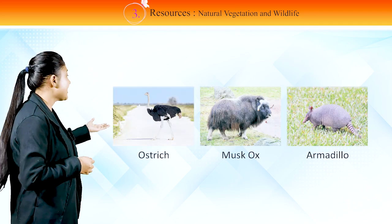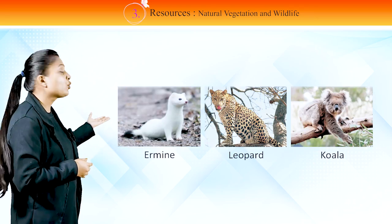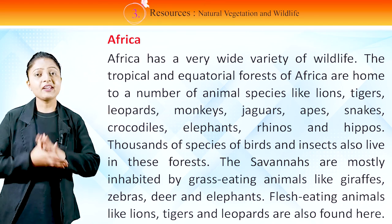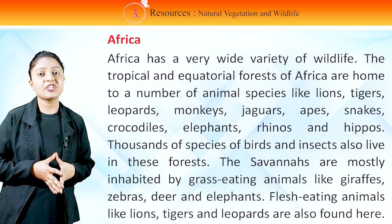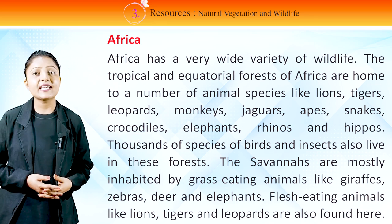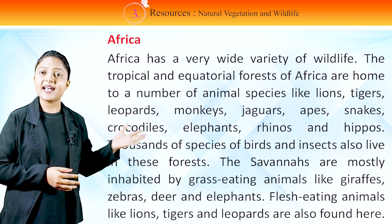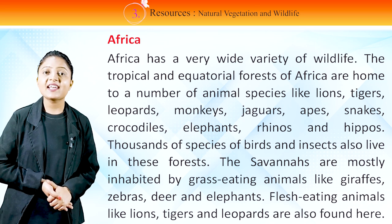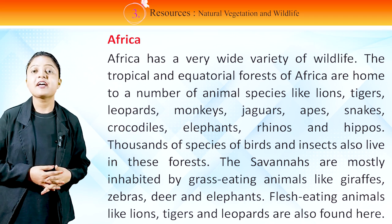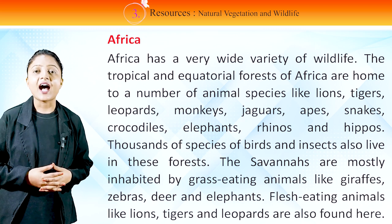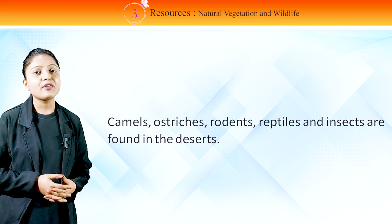In this image, you can see different wildlife: ostrich, musk ox, armadillo, ermine, leopard, koala. Africa has a very wide variety of wildlife. The tropical and equatorial forests of Africa are home to lions, tigers, leopards, monkeys, jaguars, apes, snakes, crocodiles, elephants, rhinos and hippos. Thousands of species of birds and insects also live in these forests. The savannas are mostly inhabited by grass-eating animals like giraffes, zebras, deer and elephants. Flesh-eating animals like lions, tigers and leopards are also found here. Camels, ostriches, rodents, reptiles and insects are found in the desert.